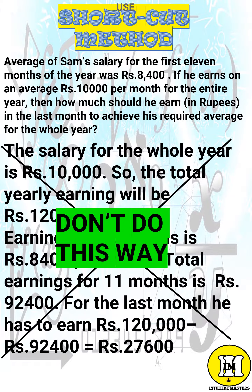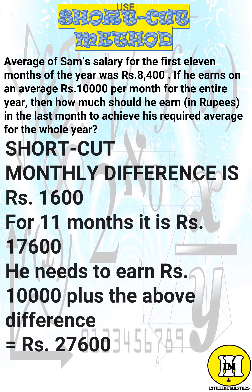Please, don't do it this way. Shortcut: the monthly difference is 1,600 rupees. For 11 months it is 17,600 rupees. He needs to earn 10,000 rupees plus the above difference. Answer: 27,600 rupees.